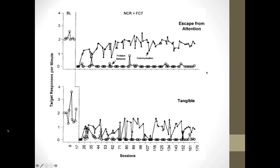Here are example data from the Journal of Applied Behavior Analysis. We'll learn about reading graphs in the next chapter, but the top panel shows problem behavior occurring roughly around two times per minute under a baseline condition. When an intervention is put in place, we see the target behavior drop to near zero levels.